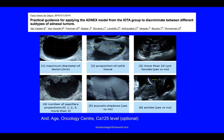This paper was published in 2015 and describes six ultrasound-based features: the maximum diameter of a lesion; the proportion of solid tissue — meaning the largest diameter of the largest bit of solid material you can find; whether or not there are more than 10 cyst locules; the number of papillary projections — whether it's 0, 1, 2, 3, or more than 3; whether or not there's any shadowing; and whether or not there's ascites. The non-ultrasound-based features are the patient's age, whether you're scanning in an oncology centre, and an optional CA125 level.